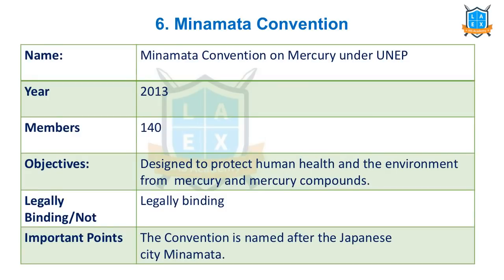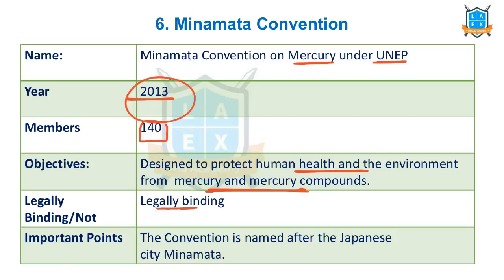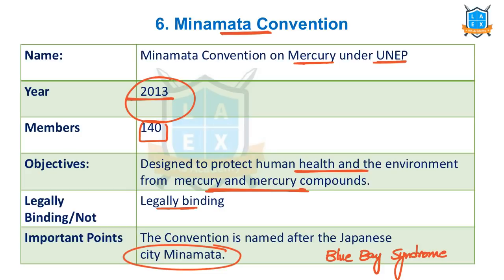The next important convention is the Minamata Convention — a convention on Mercury under the United Nations Environment Programme. It is effective from 2013. There are 140 member countries. Its objective is to protect human health and the environment from mercury and mercury-related pollution. It is legally binding. The convention is named after the city Minamata because many people there got the disease called Blue Baby Syndrome due to mercury pollution.